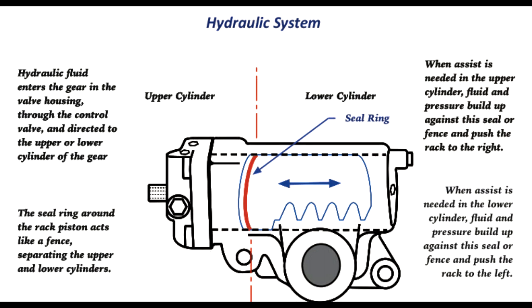When we're asking for assist in the lower cylinder, the control valve directs the fluid to the lower cylinder end of the gear. And again, pressure now builds up on the other side of the seal and that allows the hydraulic assist to push the rack piston to the left.